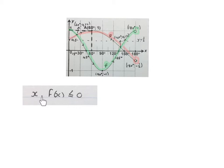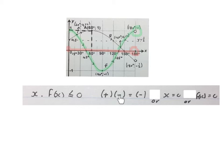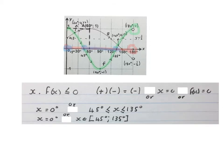The next question asks where is x times f of x smaller than or equal to zero. We check where the x-axis values and the green graph are related. x is positive everywhere in our domain. So we need the places where the f graph is negative — a positive times a negative gives negative, which is smaller than zero. But x can also equal zero and f of x can also equal zero. The final answer is x equals 0 degrees, or x is bigger than or equal to 45 degrees and x is smaller than or equal to 135 degrees. You may also write it in interval notation.